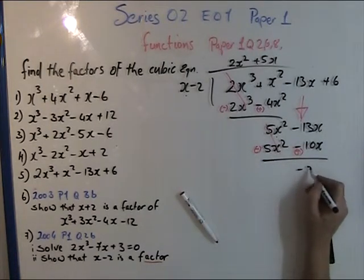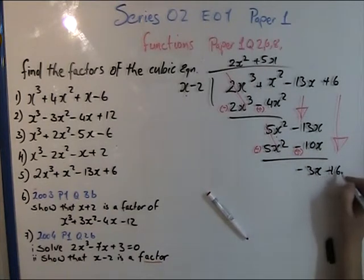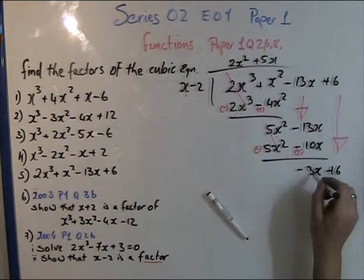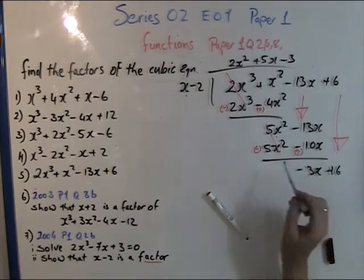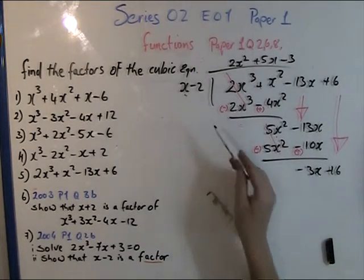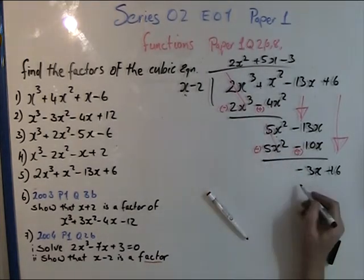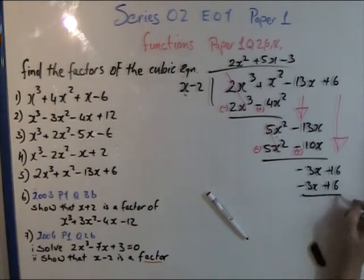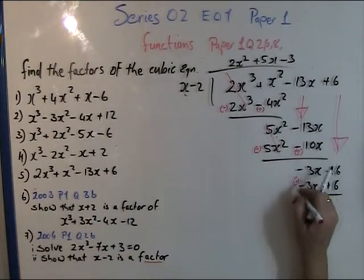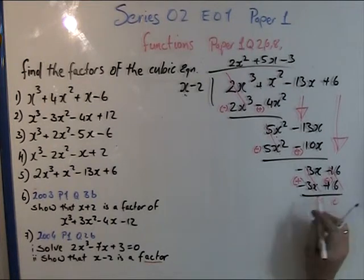Continuing: x goes into 5x² — that's 5x. So 5x × x = 5x², and 5x × (-2) = -10x. Change the sign to plus — we get a mixture. Result: -3x. Bring down the +6. x goes into -3x: that's -3. So -3 × x = -3x, and -3 × (-2) = +6. Change the sign — everything cancels to zero. No remainder.